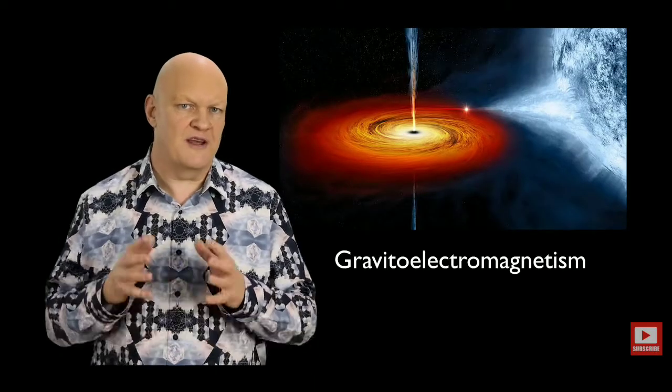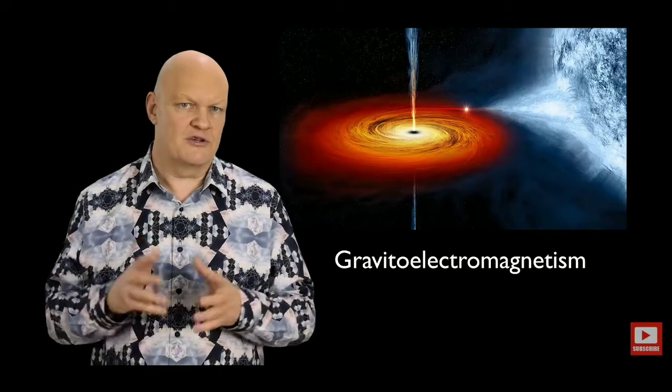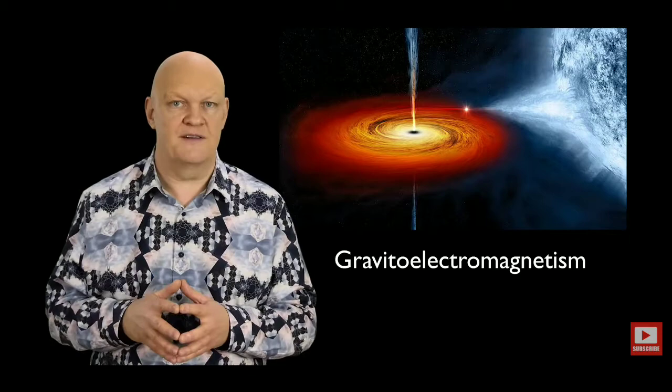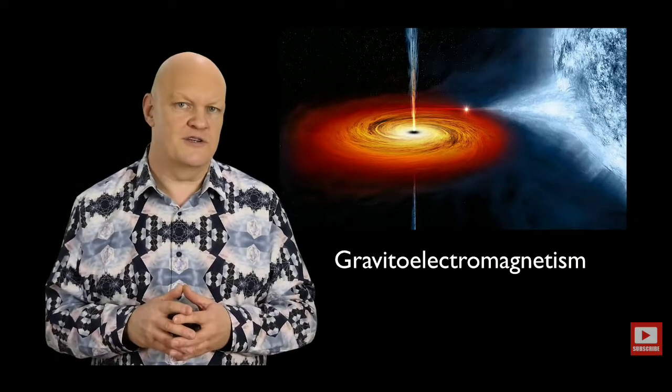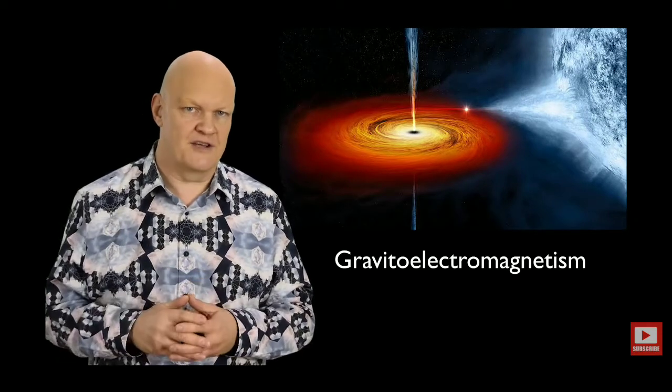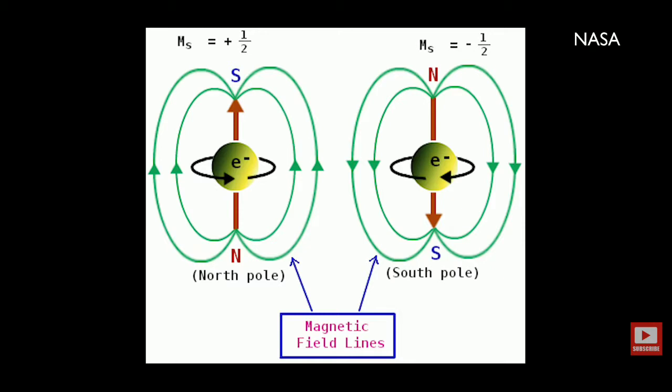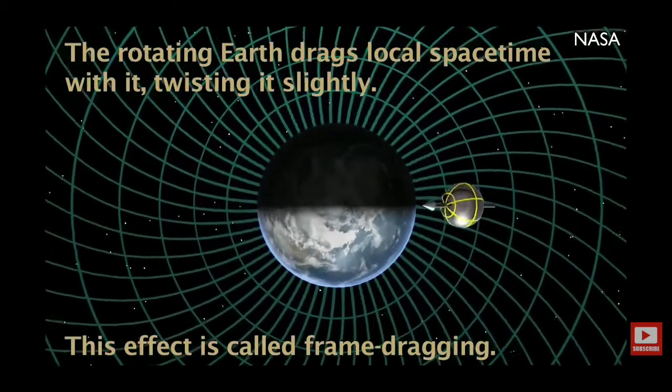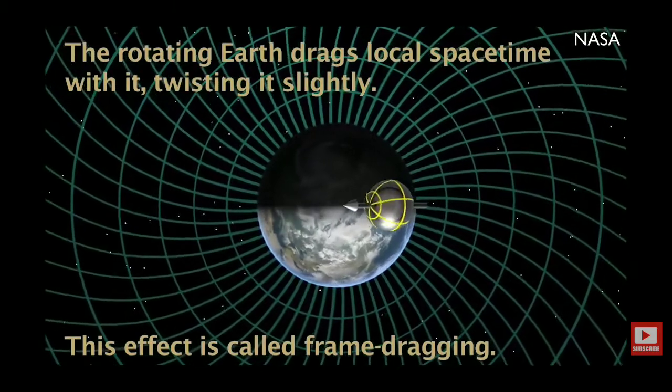These and other experiments are based on the idea of gravitoelectromagnetism, which looks at analogies between Maxwell's equations for electromagnetism and Einstein's equation for relativistic gravitation. Basically the premise is that just as a spinning electron creates a magnetic field, then a massive spinning object like the earth would create a drag on space-time.